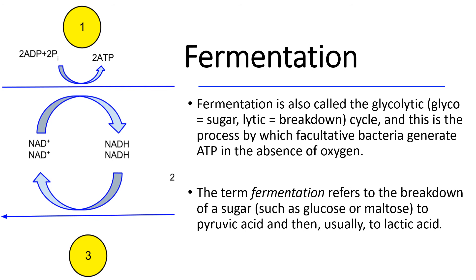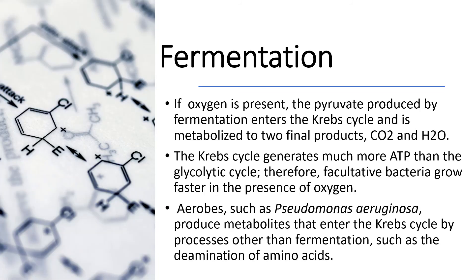Fermentation, also called the glycolytic cycle, is the process by which facultative bacteria generate ATP in the absence of oxygen. The term fermentation refers to the breakdown of sugar to pyruvic acid and then usually to lactic acid. If oxygen is present, the pyruvate produced enters the Krebs cycle and is metabolized to carbon dioxide and water. The Krebs cycle generates much more ATP than the glycolytic cycle. Therefore, facultative bacteria grow faster in the presence of oxygen. Aerobes such as Pseudomonas aeruginosa produce metabolites that enter the Krebs cycle by processes other than fermentation, such as de-amination of amino acids.